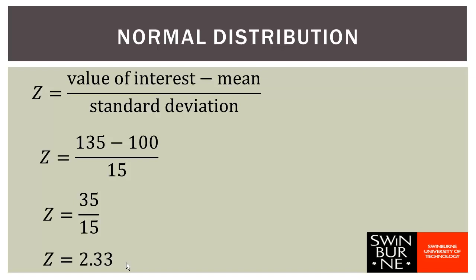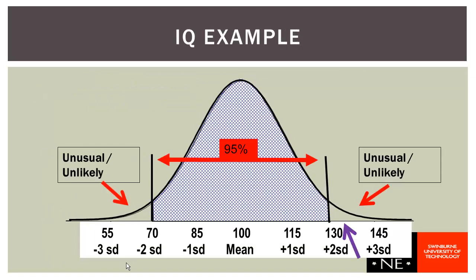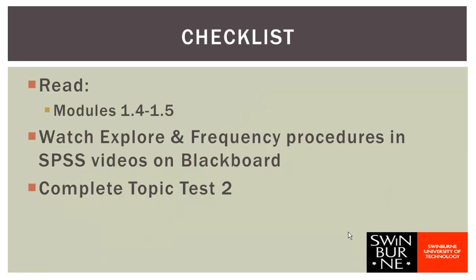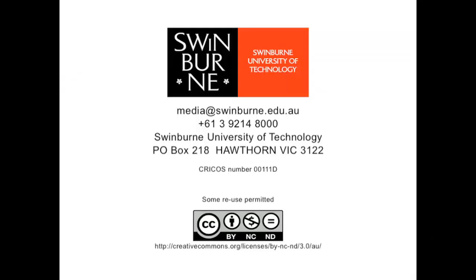We could also approach this graphically. Setting up a normal distribution with mean 100 and standard deviation 15, one standard deviation above the mean is 115, and 130 is two standard deviations above the mean. Our score of 135 falls outside that likely region - 95% of values fall between 70 and 130, so 135 is unusual, an unusually high IQ score. As a checklist for Week 2: read through Modules 1.4 and 1.5 in the textbook, watch the Explore and Frequency procedures in the SPSS videos on Blackboard, and complete Topic Test 2.